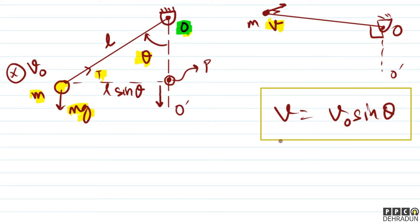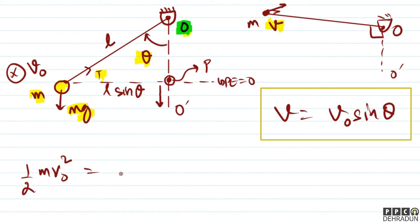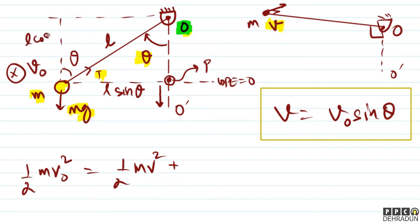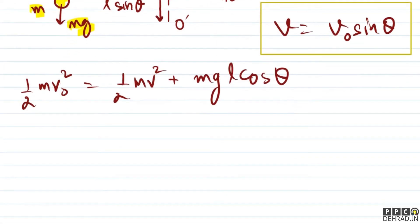Besides this, there are no dissipative forces, so energy conservation is valid. Initially, the kinetic energy is half·m·v₀². I take the initial position as the gravitational potential energy equal to zero reference. In the final state, the potential energy has increased. The ball rises by L·cosθ, so the potential energy becomes m·g·L·cosθ.